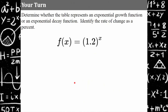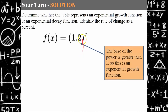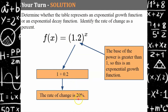Here's another one — go ahead and pause, then come back. Welcome back. The base of our power is greater than one, so it's exponential growth. We're adding to the 100% we started with, and 0.2 is 20%. Our rate of change is 20% in this exponential growth function.